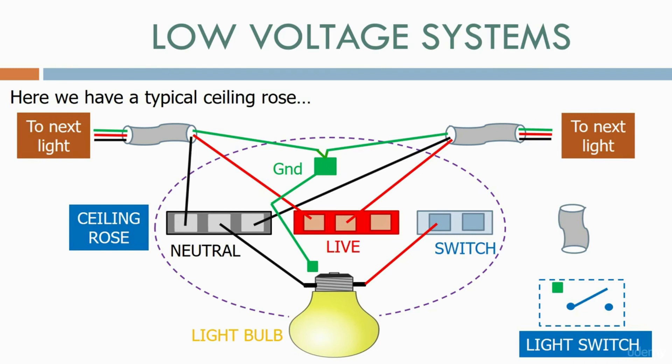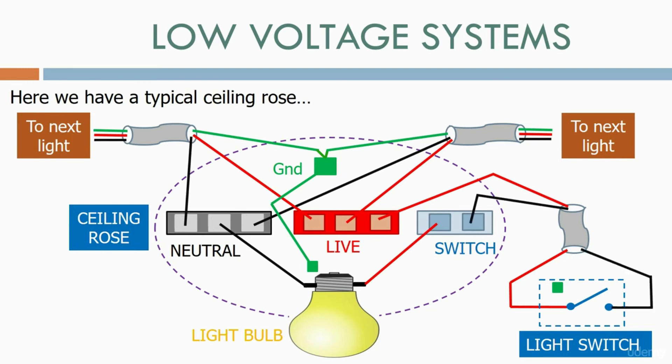We have a separate light switch, which is normally on the wall. Firstly, we connect a live connection from the live terminal in the ceiling rose, through the cable, and onto one side of the switch. Then we take the connection back through the cable and onto the switch terminal strip, and connect the ground wire to the ground terminal strip. To signify that the black wire is really a live wire, we put a small red marker on both ends. This is a common way of wiring lighting ceiling roses.